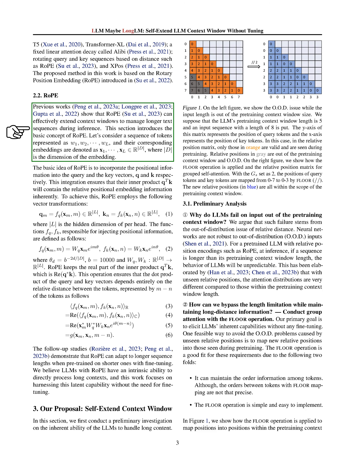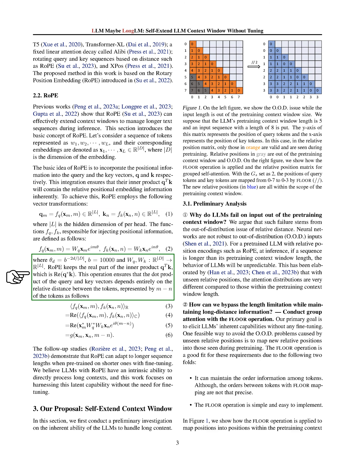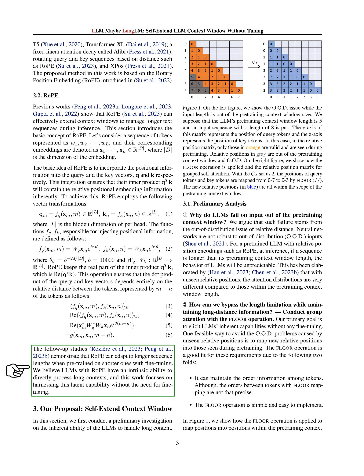Previous research has shown that RoPE can effectively manage longer text sequences. The basic idea of RoPE is to incorporate positional information into the query and key vectors, ensuring that their dot product contains relative positional embedding information. RoPE uses certain vector transformations and functions to inject positional information into the vectors, keeping the real part of the dot product of query and key vectors so the dot product depends entirely on the relative distance between tokens. Studies have shown that RoPE can adapt to longer sequence lengths when pre-trained on shorter ones with fine-tuning. We believe that language models with RoPE have the ability to process long contexts, and our work focuses on harnessing this capability without the need for fine-tuning.